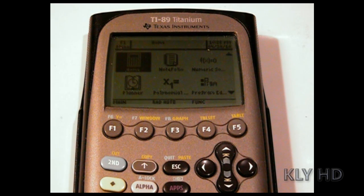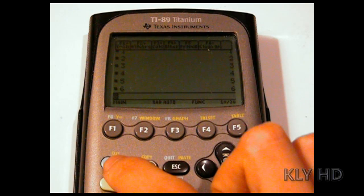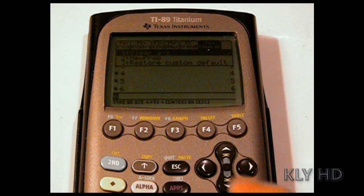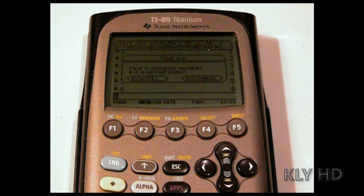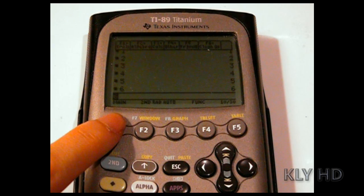To clear your home screen, go to F6 by hitting 2nd F1. Choose Clear A through Z. This will clear values stored to these variables. Then repeat and choose New Problem.